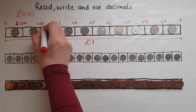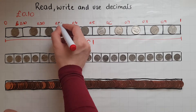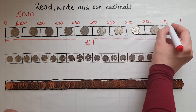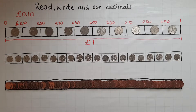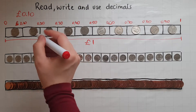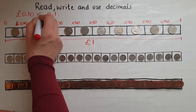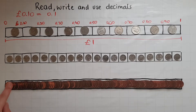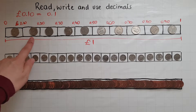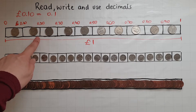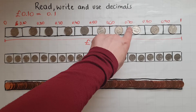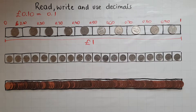So 0.10 represents 10p, 0.20 represents 20p, 0.30 represents 30p, then 40, 50, 60, 70, 80 and 90. So 0.1 is exactly the same as 0.10 because there are no pennies after that. It's just a 10p coin on its own. Two of them make 0.20, and that's 0.30, 0.40, 0.50, 0.60, 0.70, 0.80, 0.90, and 1 or 1 pound.